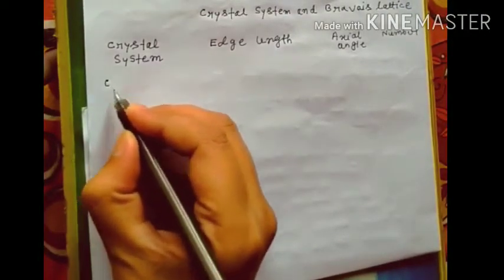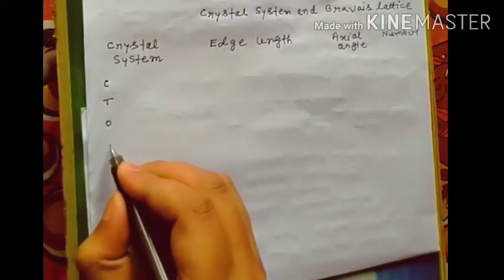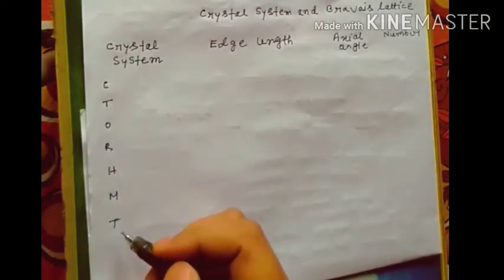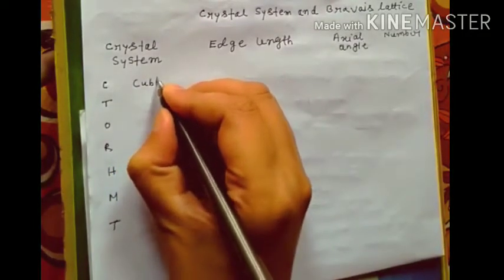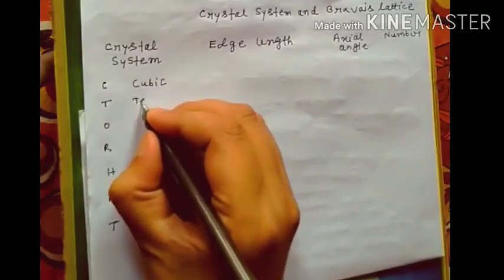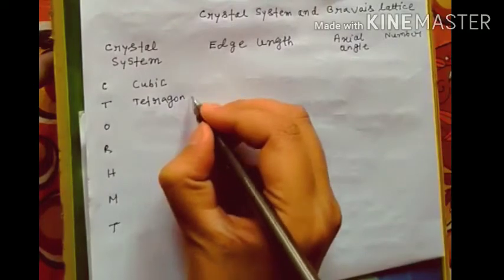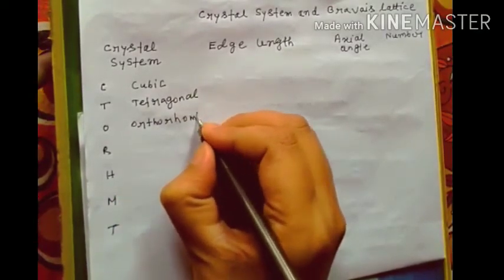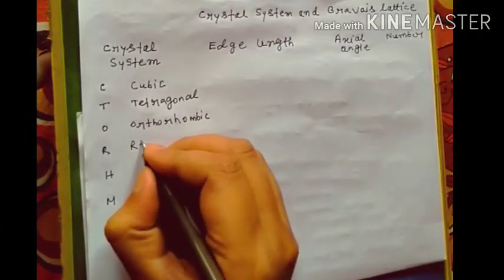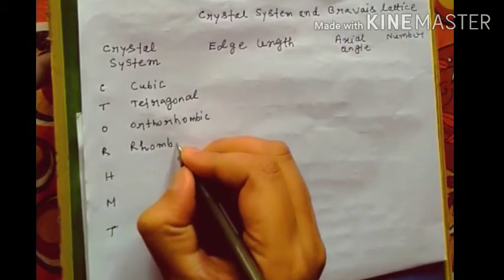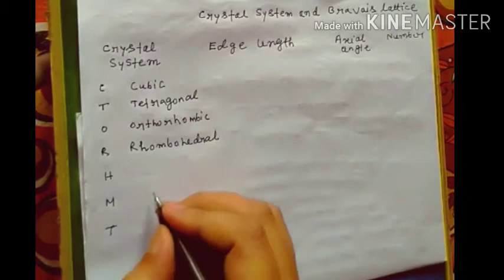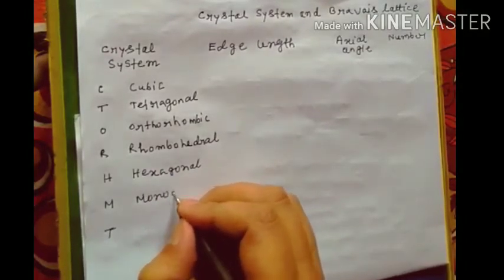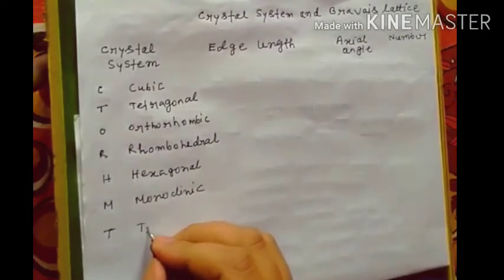I am going to teach the code C to HMT. C for cubic, T means tetragonal, O orthorhombic, R is rhombohedral, H is hexagonal, M is monoclinic, and T is triclinic.